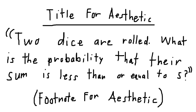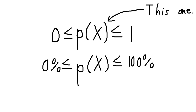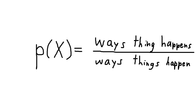Here's how it read: Two dice are rolled. What is the probability that their sum is less than or equal to five? So let's set forth and try to solve this problem. The probability of something is a number between zero and one inclusive, or between zero percent and one hundred percent inclusive, and this question was requesting the numerical value. An event's probability is the number of ways that an event can occur divided by the total number of events that can occur within that system.